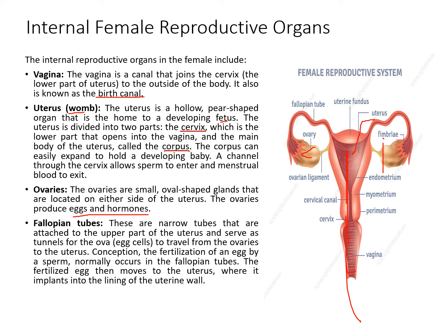The fallopian tubes are narrow tubes attached to the upper part of the uterus. They serve as tunnels for the ova to travel from the ovary to the uterus. The egg is produced in the ovary, travels through the fallopian tube where fertilization occurs, and then implantation of the fertilized egg takes place in the uterus.